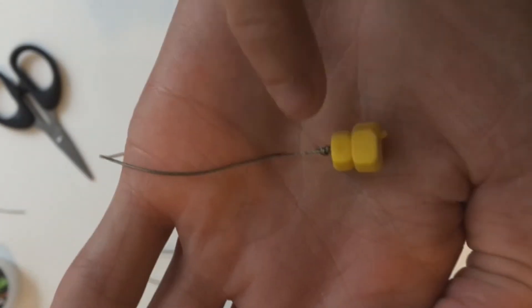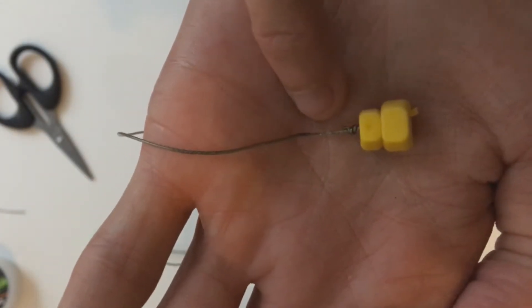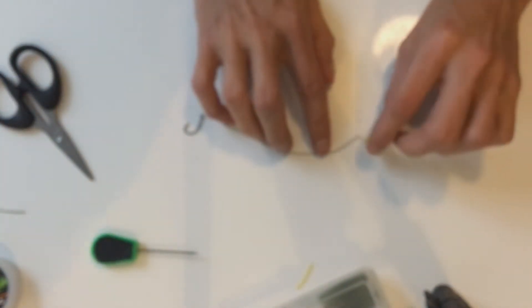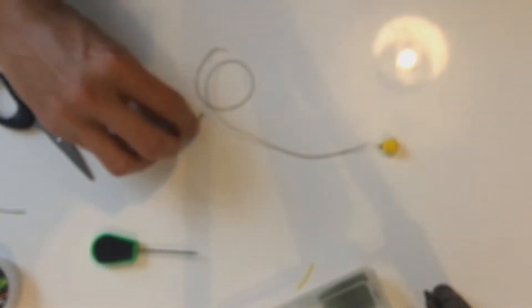Now I don't know if you can see that. Yeah, as you can see here I've stripped back the braid and that's just going to create a bit of a hinge section for the sweet corn to be able to stand up easier, to pop up easier if you like.